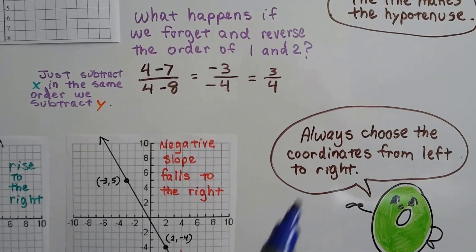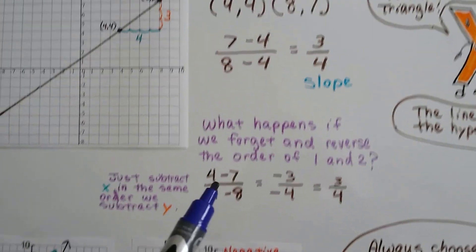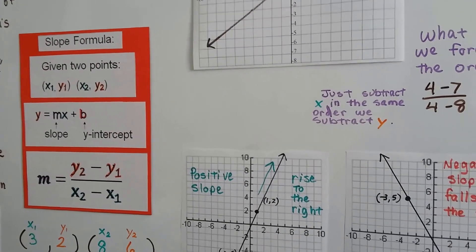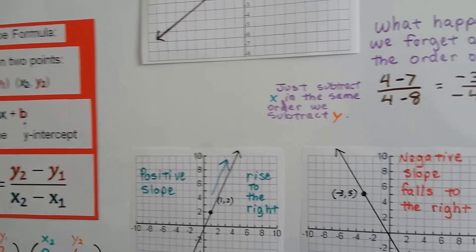So always choose your coordinates from left to right, and you won't have to worry about this problem, and you'll be able to follow this formula. y2 minus y1 is the numerator, and x2 minus x1 is the denominator.